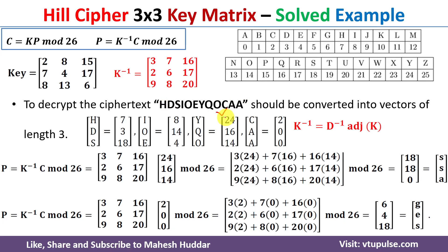In this video I have discussed how to use the Hill cipher algorithm to encrypt a given plain text and how to decrypt that ciphertext back into plain text. I hope the concept of Hill cipher is clear. If you liked the video, please like and share with your friends, press the subscribe button for more videos, and press the bell icon for regular updates. Thank you for watching.